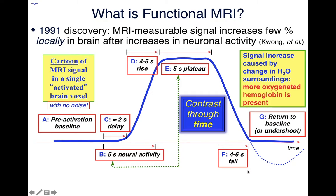This slowness of the response is a strong indication that this is not a direct measurement of neuronal activity — and no one ever actually thought it was. It's a measurement of changes in the blood, which explains why things are slow. In particular, the signal increase is caused by changes in the water molecules that the MRI actually measures, specifically the magnetic field around those water molecules, which changes when more or less oxygenated hemoglobin is present. More oxygenated hemoglobin means more MRI signal. This is called BOLD imaging — blood oxygenation level dependent signal — and it's a great acronym because it sounds so impressive.